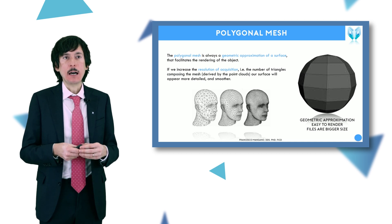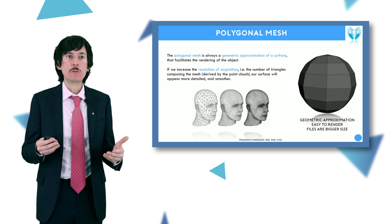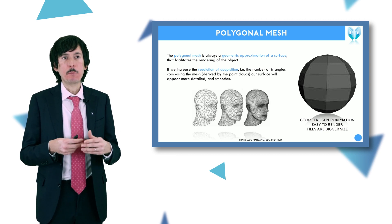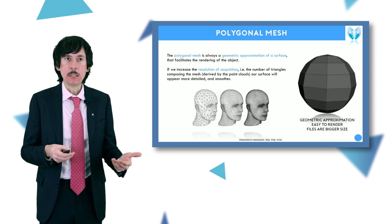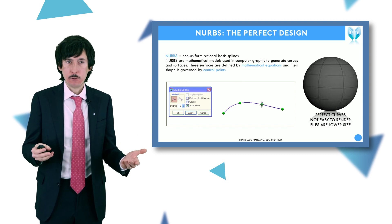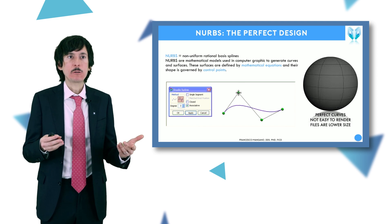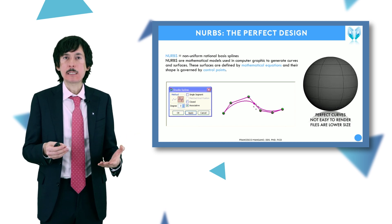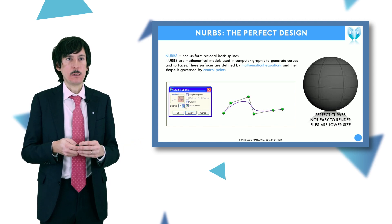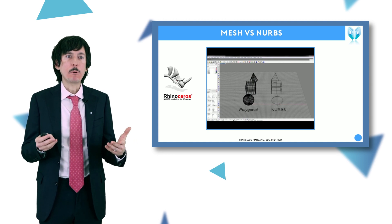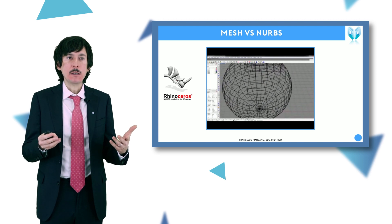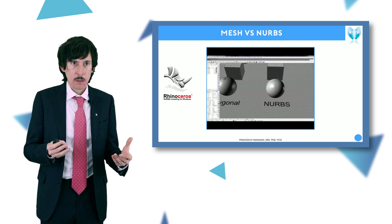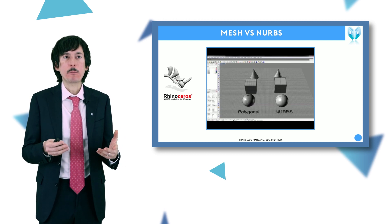It is very important to remember that the mesh is always a geometric approximation of the surface by means of triangles. Our STL files are reconstructions of the surface of our objects, but they are geometric approximations. With higher resolution of acquisition we have more triangles, so the objects appear smoother and more perfect, but it is always a geometric approximation. A polygonal mesh is different from a library file like a NURBS — those files are perfect because they are controlled by points. At higher magnification, the polygonal mesh shows vertices, while the NURBS is almost perfect with no vertices.